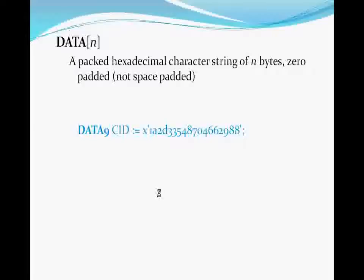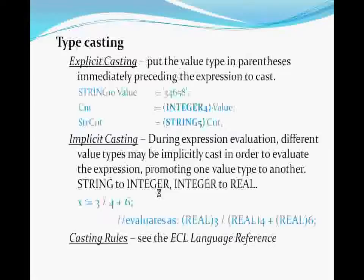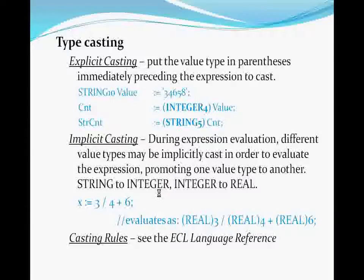Data is a packed hexadecimal data type, good for storing blob-type data. Type casting in ECL is done by putting the destination data type inside parentheses — making it a casting operator — then placing that operator immediately to the left of the expression you want to cast. ECL's type casting rules are documented in the language reference and are similar to most languages' casting rules.